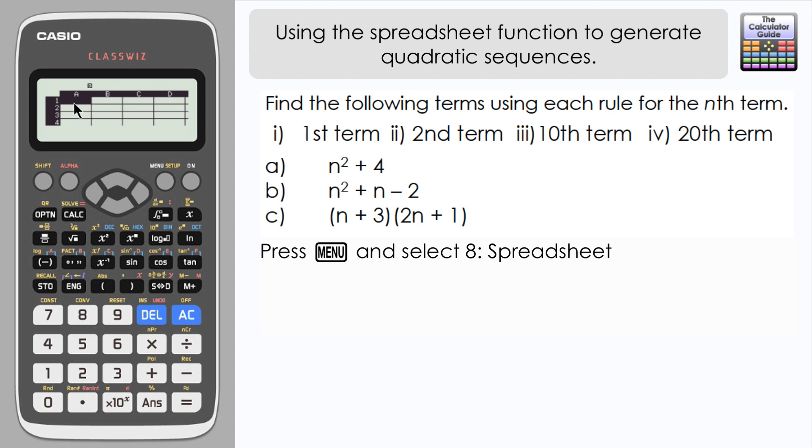So I'm going to start by just in the first cell that we've got here, A1, inputting the first n value which is 1 for the first term, and I'm going to press equals. Now for all of the remaining values that are within this column, I'm going to use a formula.